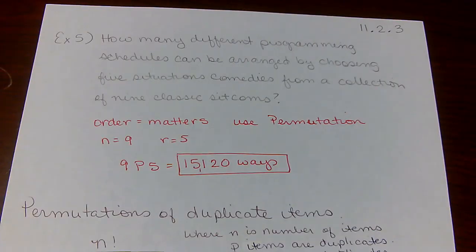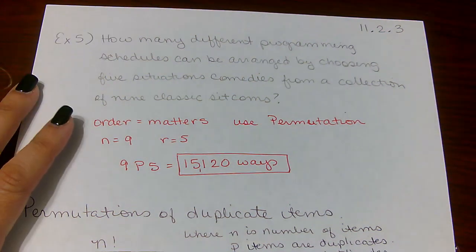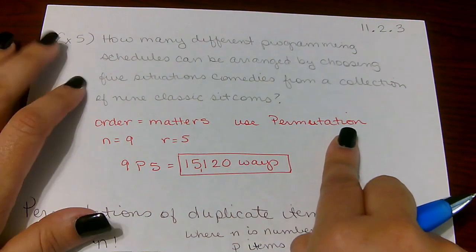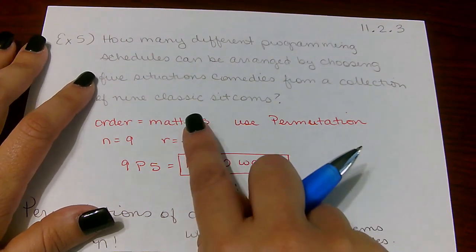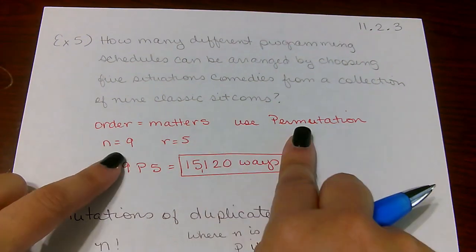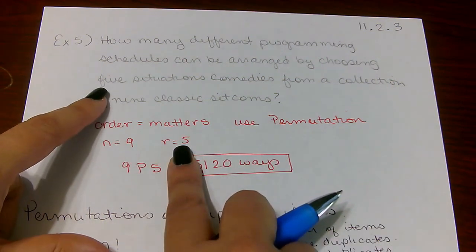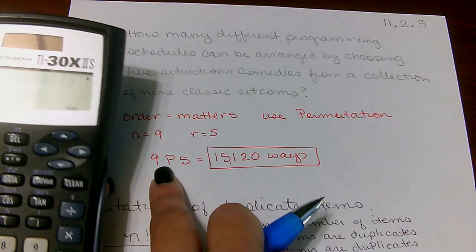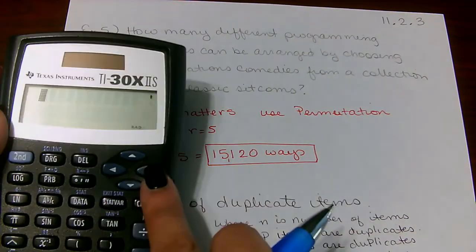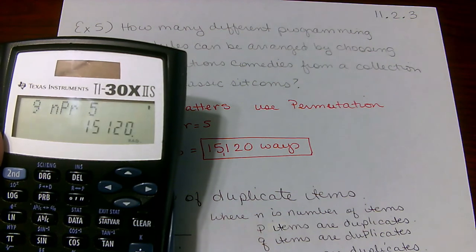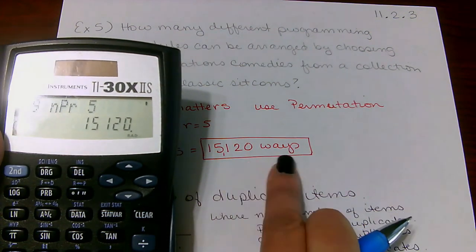Number five: how many different programming schedules can be arranged by choosing five situation comedies from a collection of nine classic sitcoms? Order matters because we're talking about a lineup, so we use permutation. N = 9, R = 5. Nine permutation five gives 15,120 different ways.